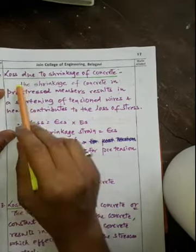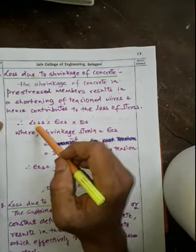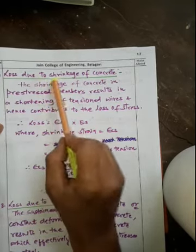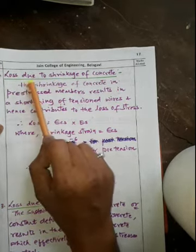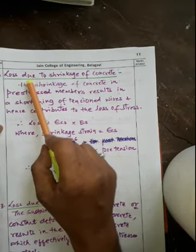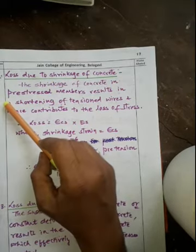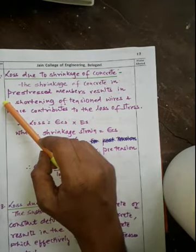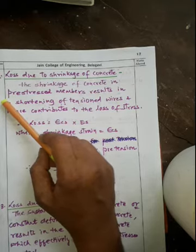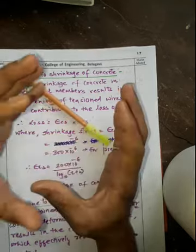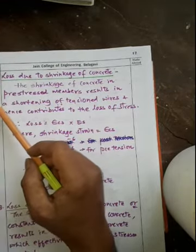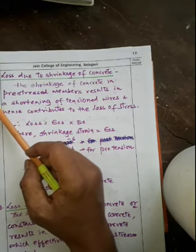The next loss is loss due to shrinkage of concrete. This is an important loss. Because of temperature variation or because of heat of hydration, the concrete will shrink, and because of that, a loss takes place in prestressed concrete.